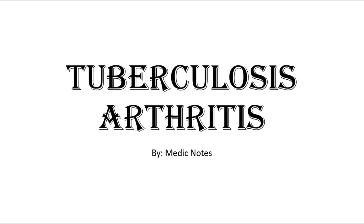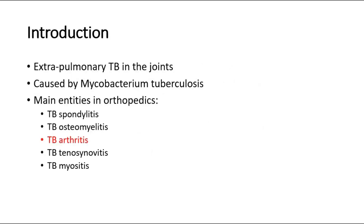Hi and welcome back to another video of Medic Notes. This video will be on tuberculosis arthritis. Tuberculosis is a chronic debilitating illness caused by Mycobacterium tuberculosis, which usually affects the lungs once it enters the body through droplet infection. In some cases, however, TB occurs outside the lungs and is known as extra-pulmonary TB. Extra-pulmonary TB in the joints is known as tuberculosis arthritis, which is the main topic for this video.